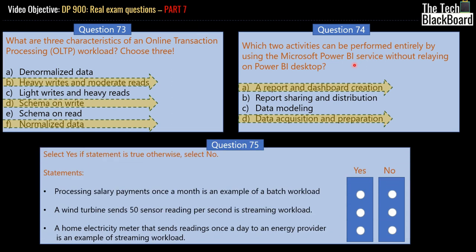Question number 75 is a yes/no question. The first statement says: processing salary payment once a month is an example of a batch workload. Since we are processing the salary once a month — processing a big chunk of data — it definitely is a batch workload. So the answer is yes.